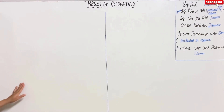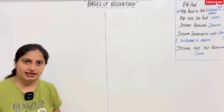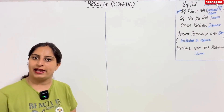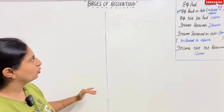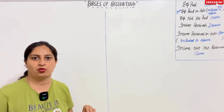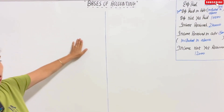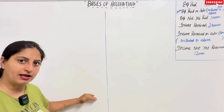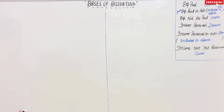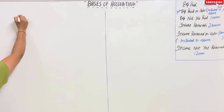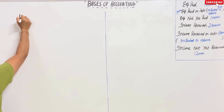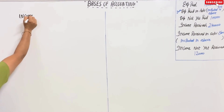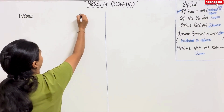First, what do we do? We will get the answer for both cash basis and accrual basis. You will follow a chart. From this chart, you will get an accurate answer. On one side we will have income, and on the other side we will have expenses.